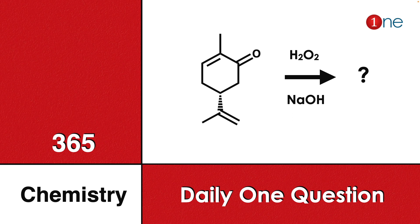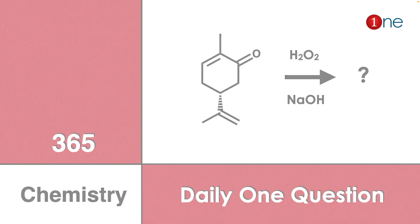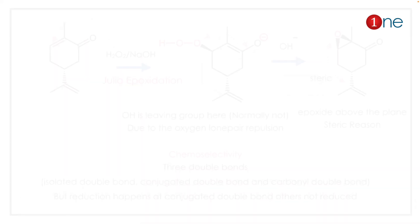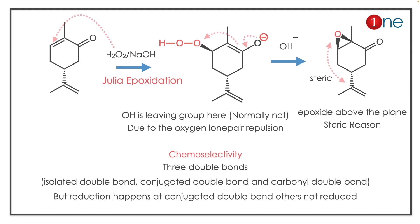You are reacting with hydrogen peroxide and NaOH. You have to find the final product. The answer is Juliá epoxidation. If you know the reagent and the conjugated alkene, you might realize it's a Juliá epoxidation — here you have many double bonds.